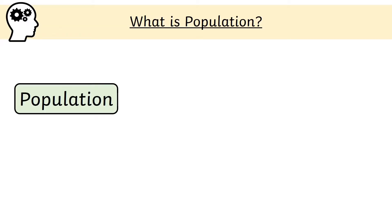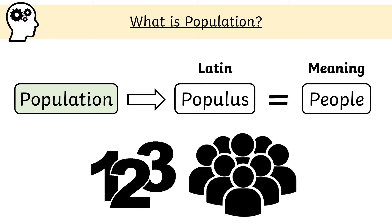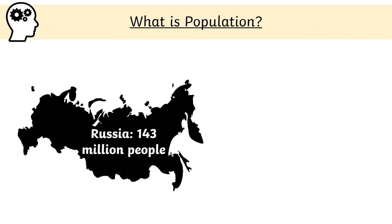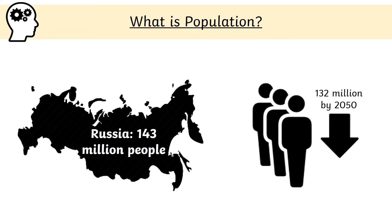The term population comes from the Latin word 'populus', which means people. In geography, it refers to the number of people living in one area. The population of Russia was 143 million as of 2019 — more than double the population of the UK. The UN predicts that Russia's population will fall to 132 million by 2050 due to a low birth rate.